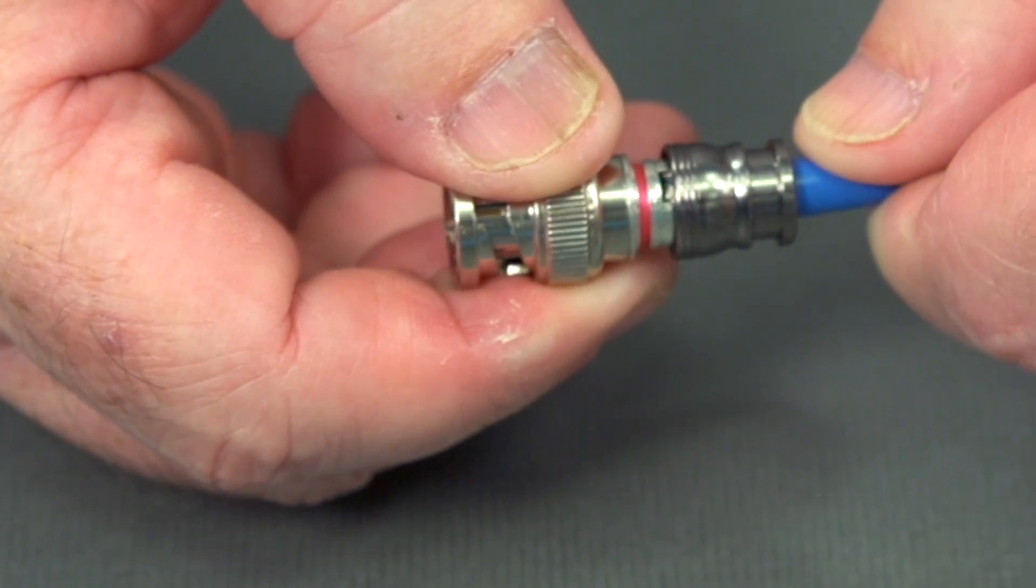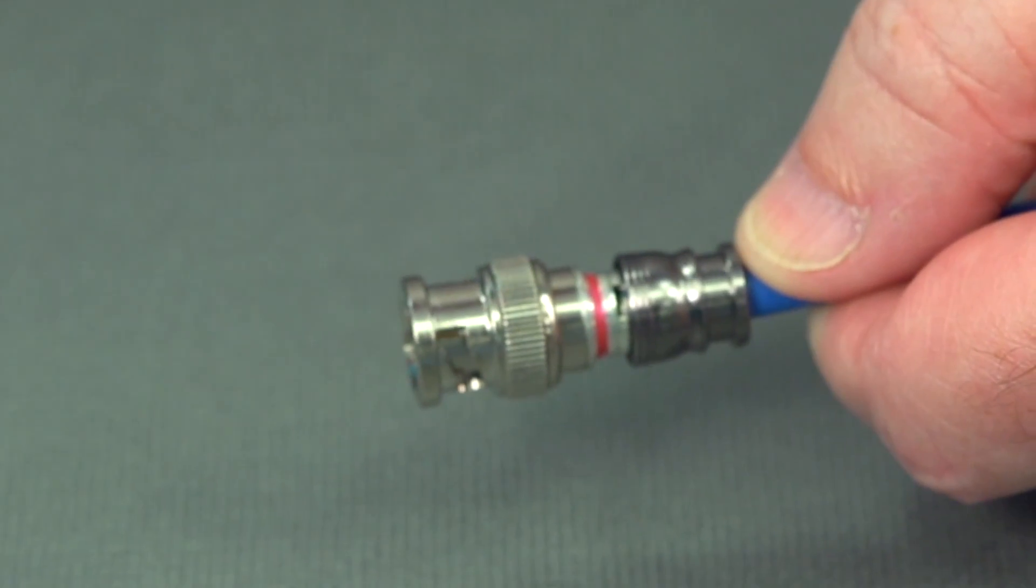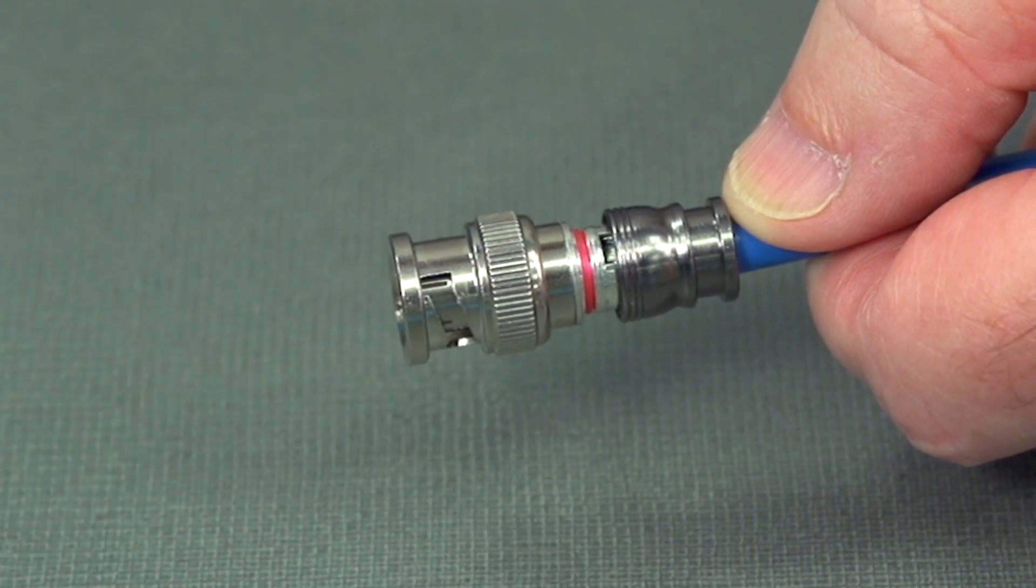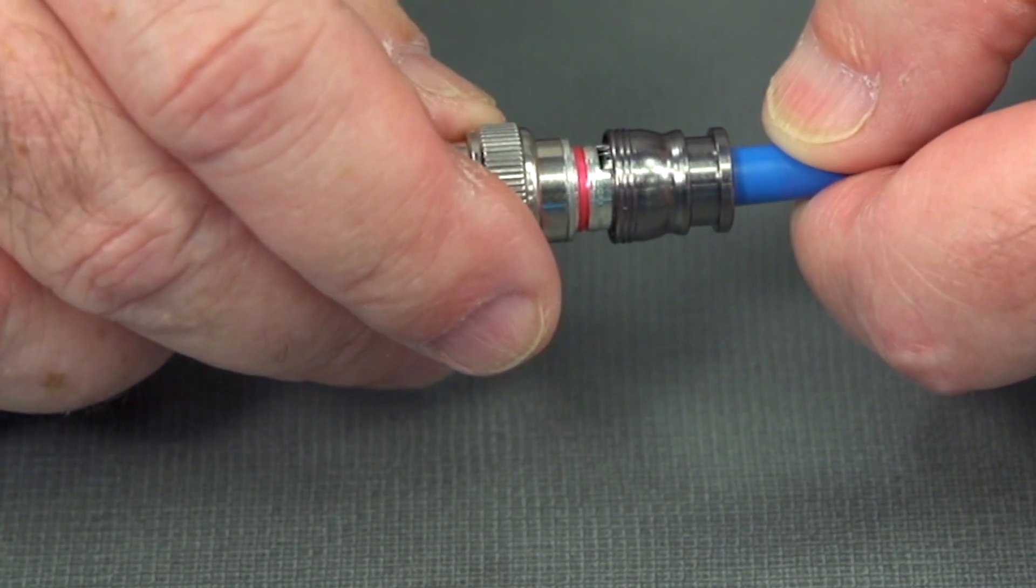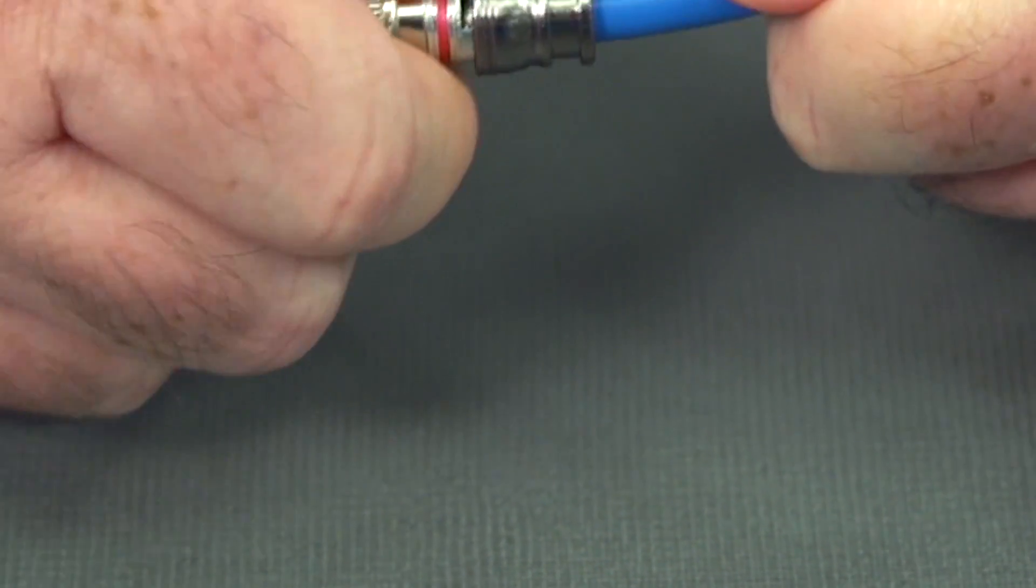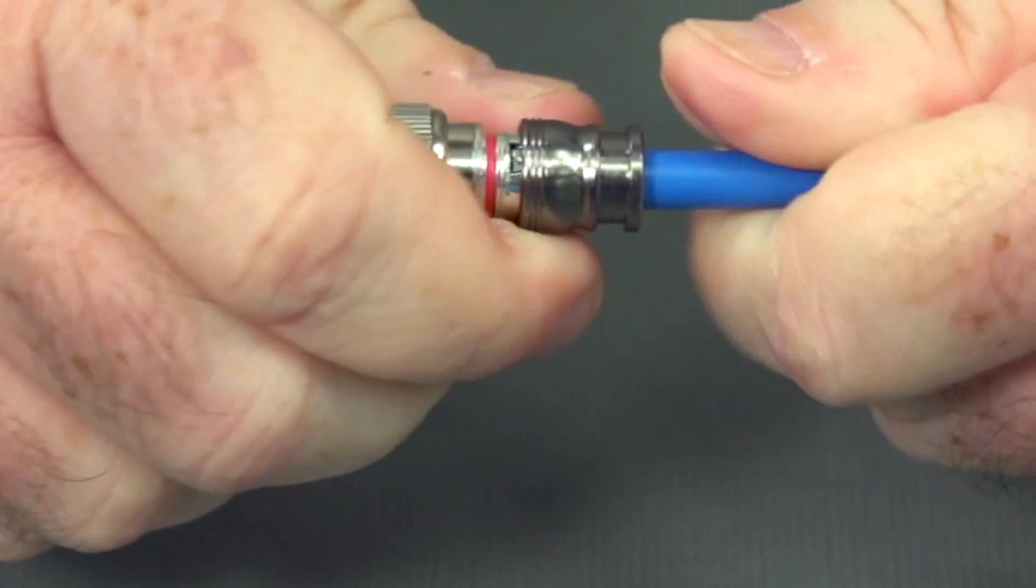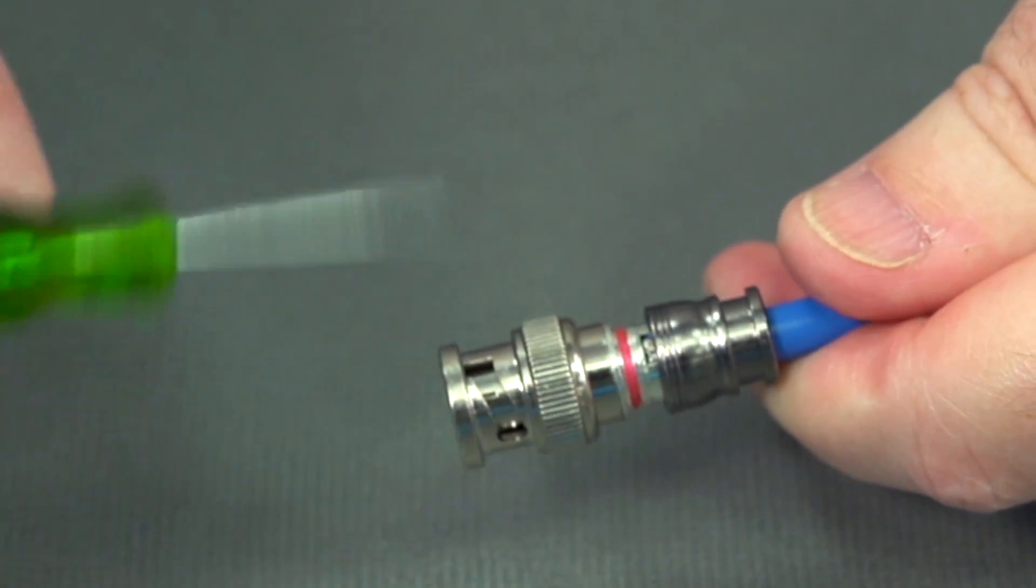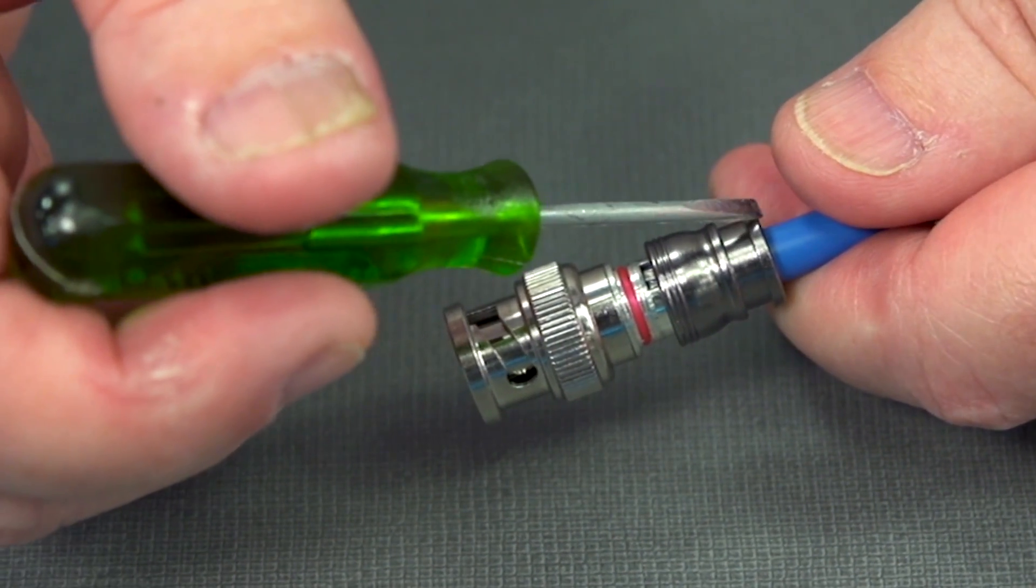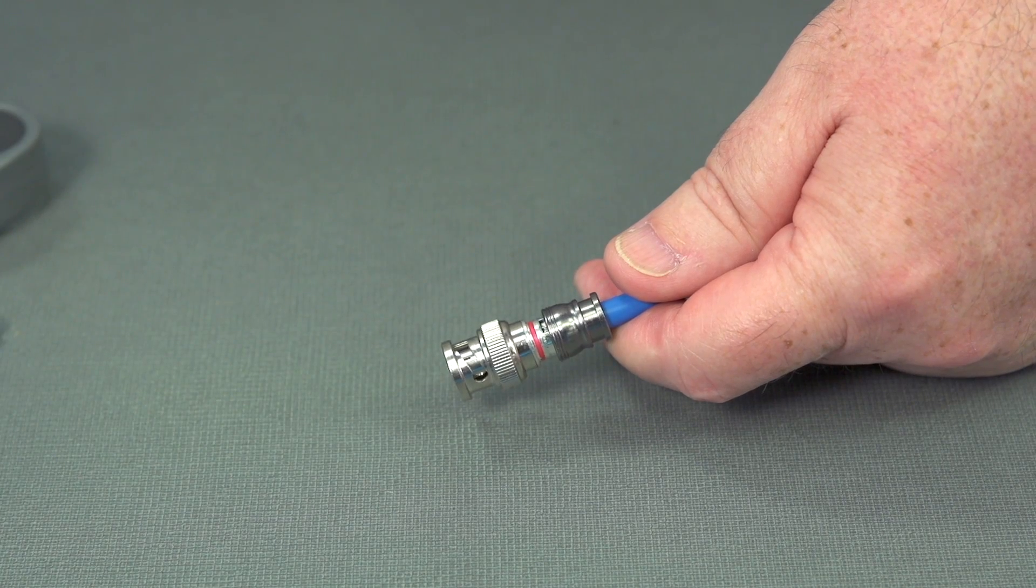Again, you can see that there's an inspection hole. So we should be able to see our shield inside the inspection hole. Let's give it a little bit more. There we go. So you can see the shield inside the inspection hole. That way we know that we pushed the cable far enough into the connector to make a good connection.